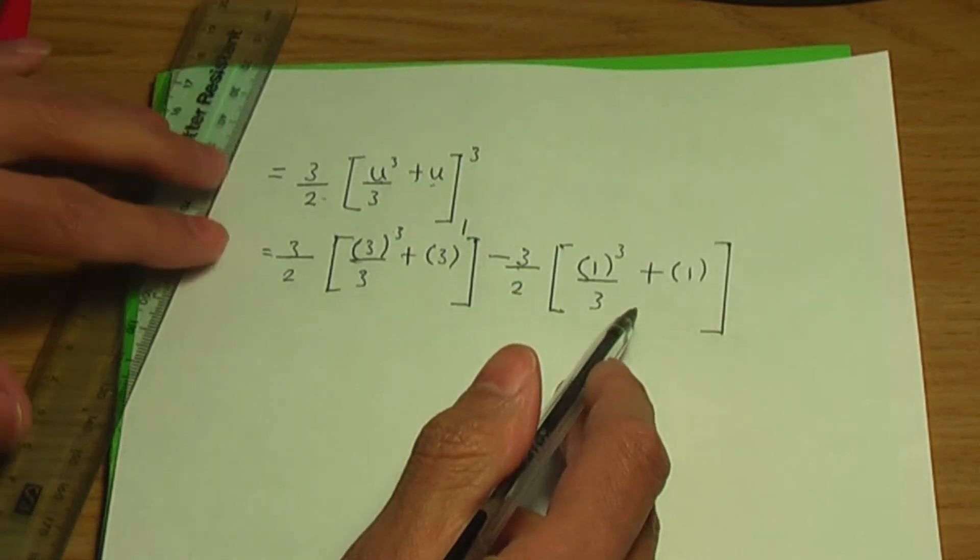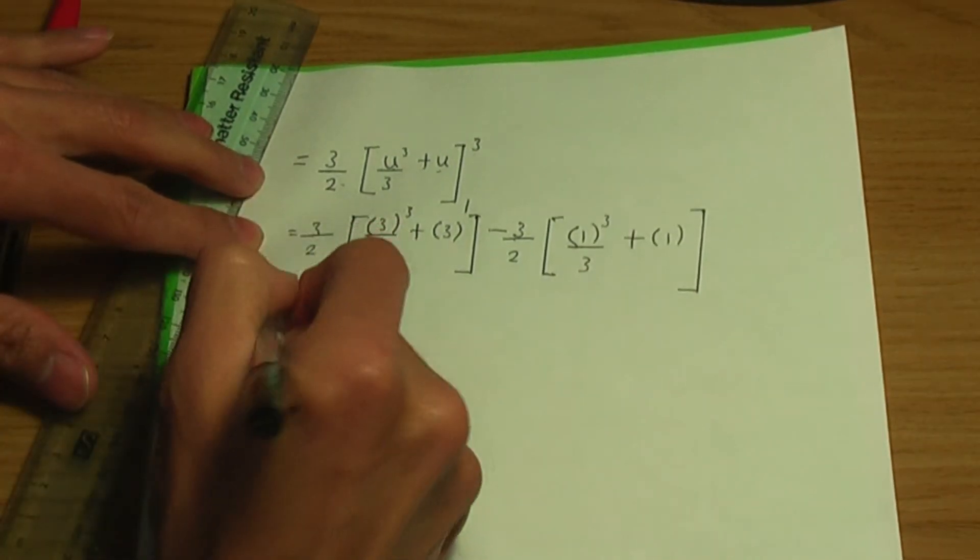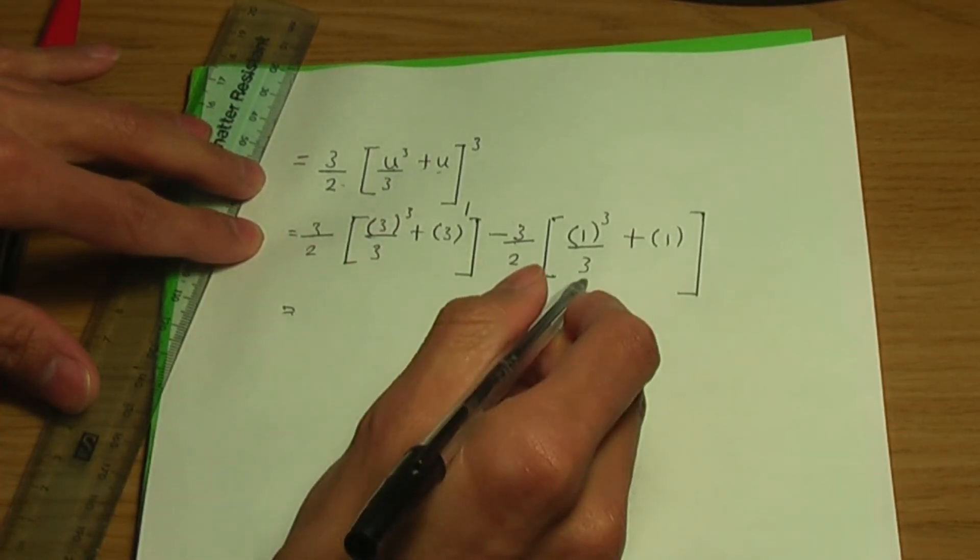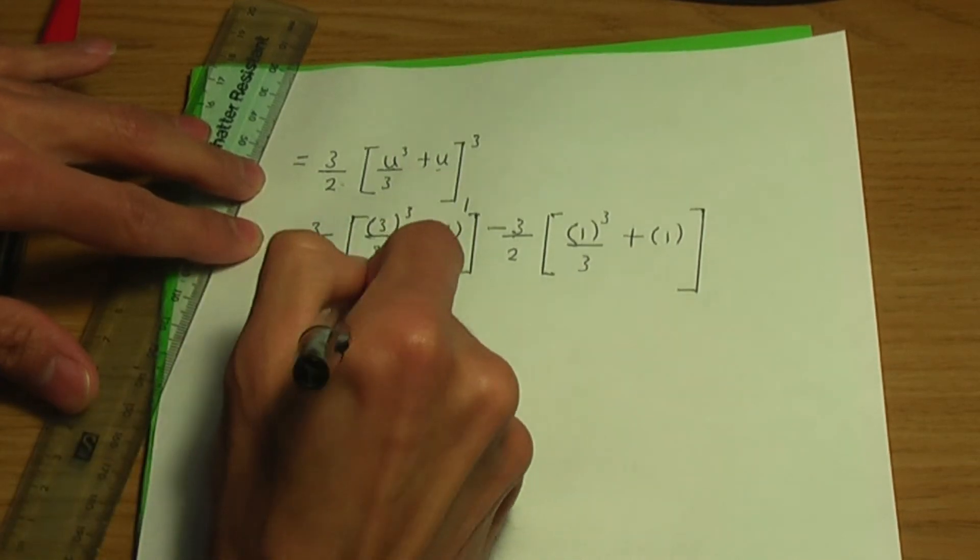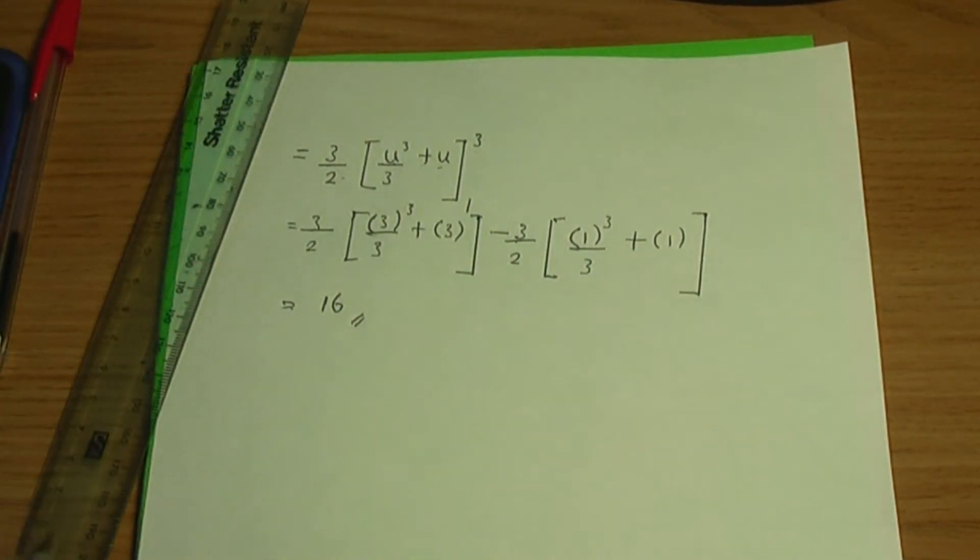This is what you should have upon replacement of the limits. Now, when you calculate this, eventually you're going to get a final answer of 16. This should be the solution to this particular question.